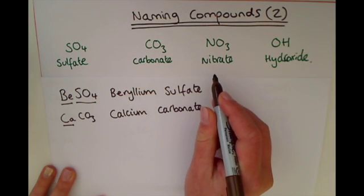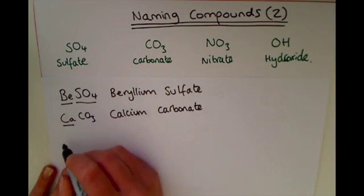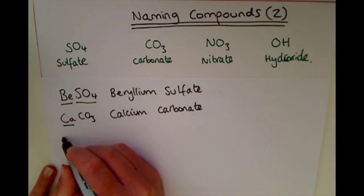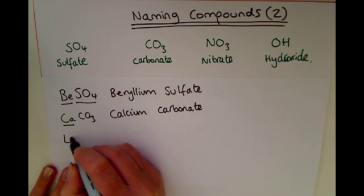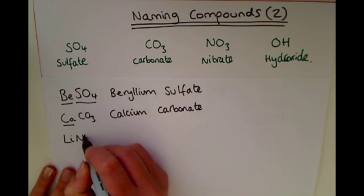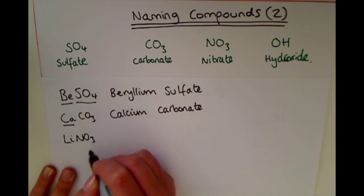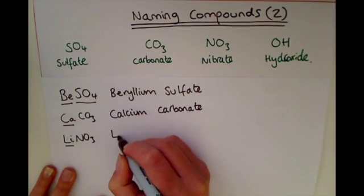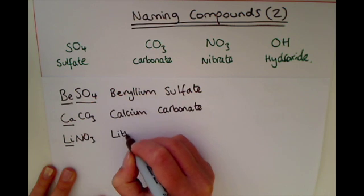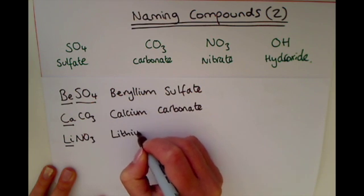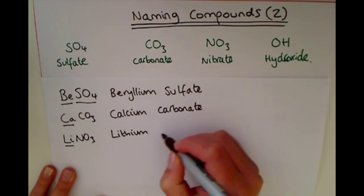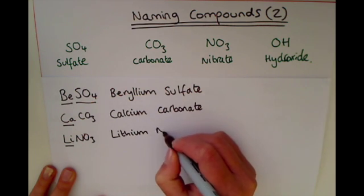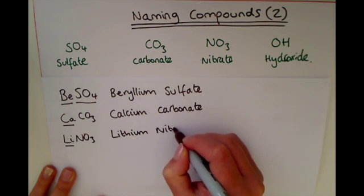For nitrate, for example, if you had LiNO3, you'd look up Li in the periodic table — that stands for lithium. And the last word would be nitrate, so the compound is lithium nitrate.